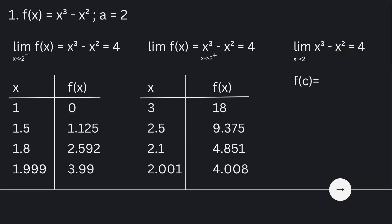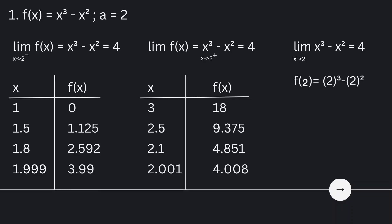Next, we are going to determine f of c. So f of 2 is equal to x cubed minus x squared, and we substitute 2 for all the x's. It will be 2 cubed minus 2 squared. 2 cubed is equal to 8 and 2 squared is equal to 4, so 8 minus 4 is equal to 4. Thus, the limit of f of x as x approaches 2 is equal to f of 2.